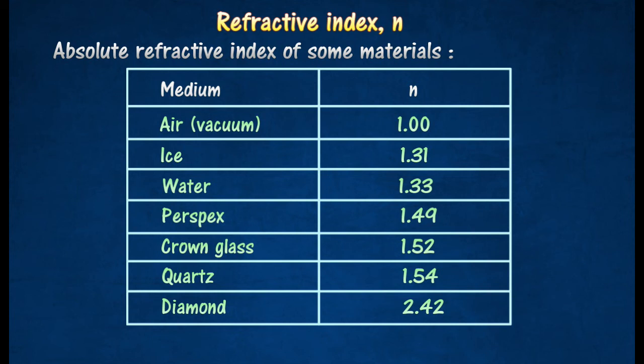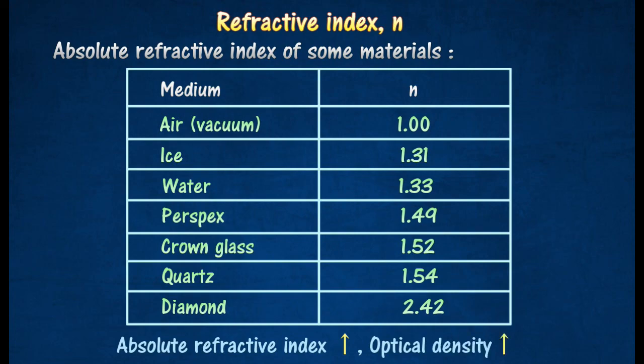For light traveling from a vacuum or air into a medium, the optical density increases as the absolute refractive index increases.